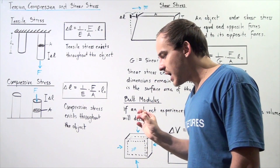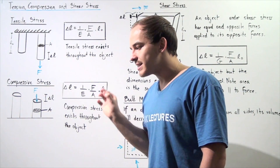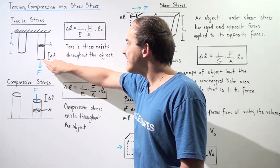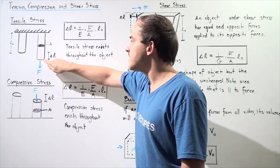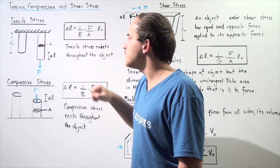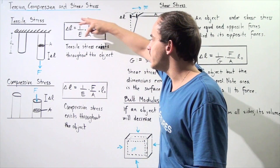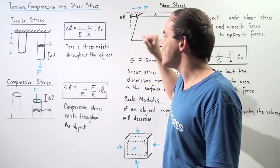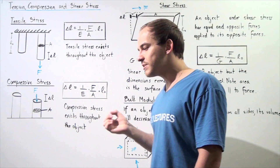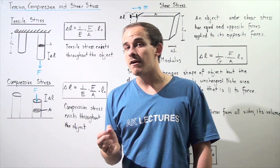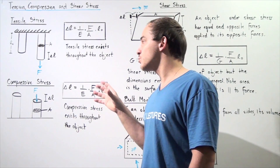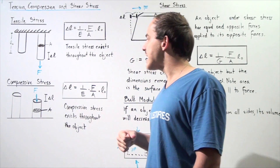Notice that when we apply our tensile force onto our object, the force is felt throughout the entire object, and that means tensile stress exists throughout the entire object. If the tensile stress is high enough, the object can fracture, as we'll see in a future lecture.